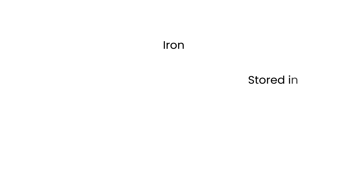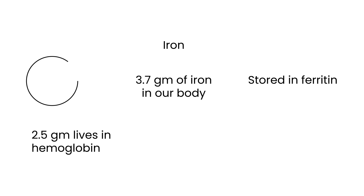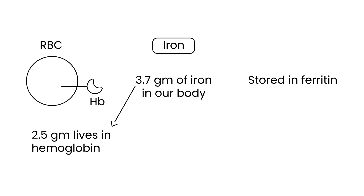Where does iron live in the body? It's stored mostly in ferritin. In our entire body, we have approximately 3.5 grams of iron, and a significant amount — 2.5 grams — lives in hemoglobin, which sits inside red blood cells. So a lot of the total iron in our body is actually inside hemoglobin, and the rest is mostly found stored inside ferritin.